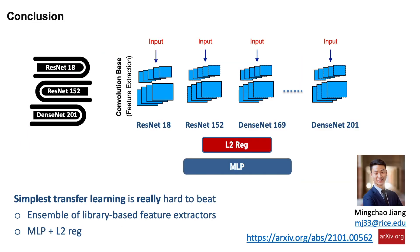In conclusion, we found the simplest transfer learning method. Rather than pre-training a huge model on a massive dataset, we can just use a group of smaller published feature extractors directly, with an MLP and L2 regularization on top. It turned out to be very hard to beat. The key novelty here is its simplicity — welcome to stop by our poster to find more. Thank you.